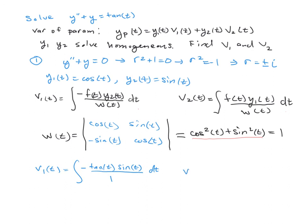v2(t) equals the integral of tan(t) times y1, which is cos(t), divided by the Wronskian, which is 1. In the next video, we'll find these integrals and build our particular solution.